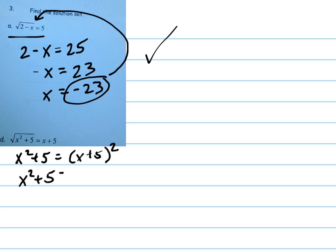Go ahead and foil that out. x squared plus 10x plus 25. Remember you can't distribute the 2 into sum. It doesn't work.